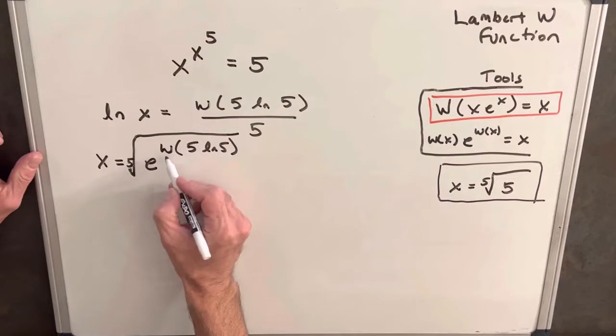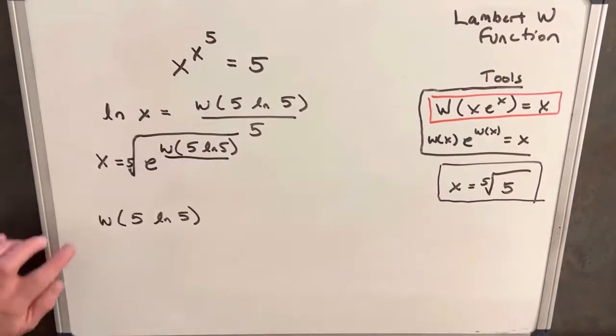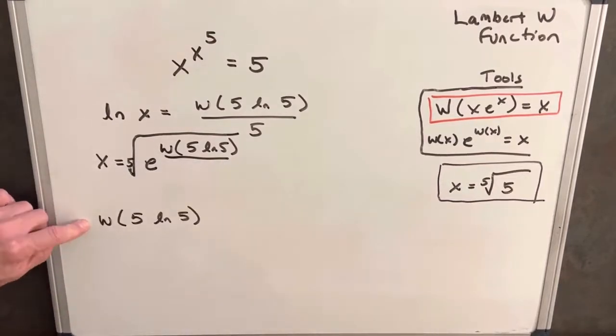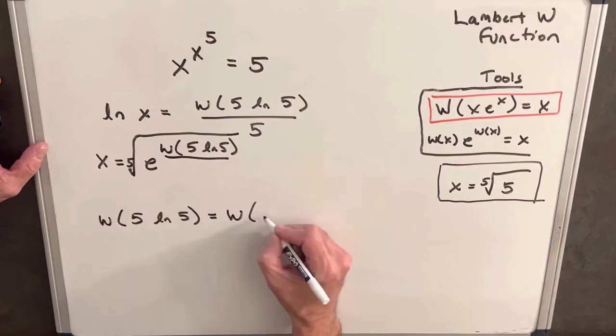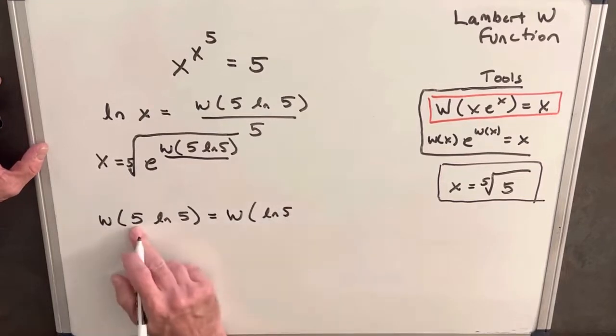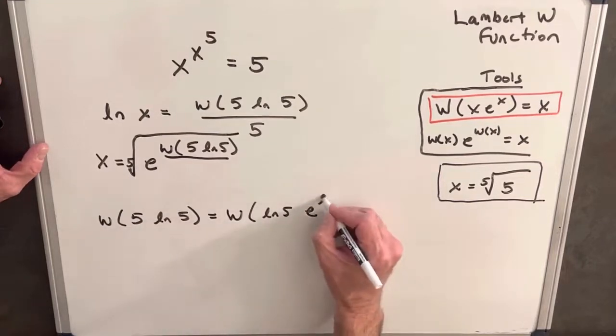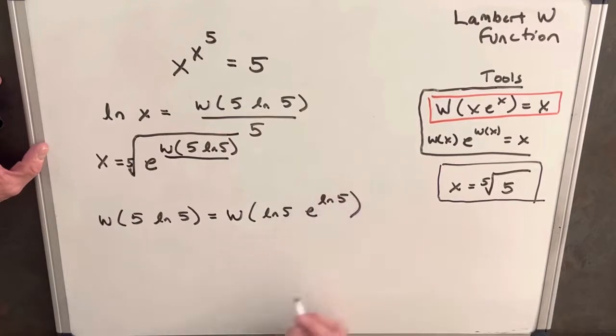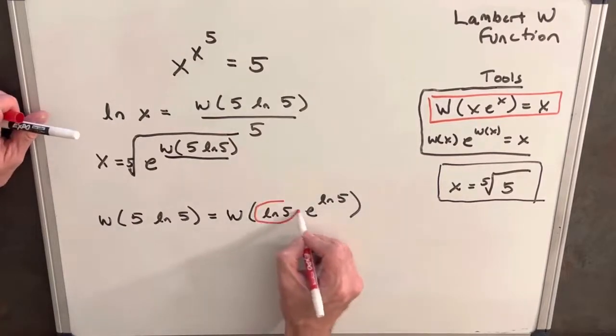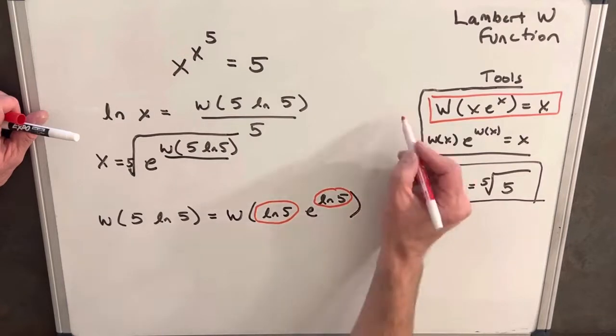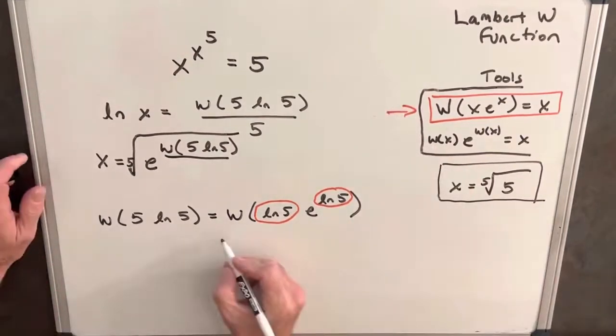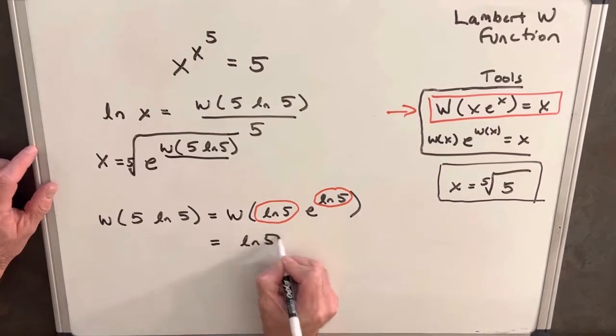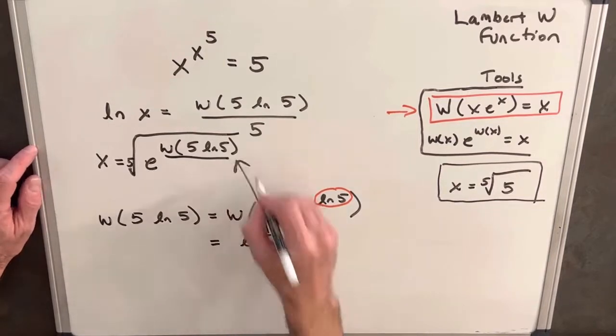So this is one case of Lambert W function where we actually can find an exact solution. We can just manipulate this a little bit. We can rewrite this as ln five, and then write our five as e to the ln five. And then you'll see that we have the same coefficient and exponent again, so we're in this format that we want. And so that means that this here is just going to equal ln five, and so we can take that and replace that back up here.